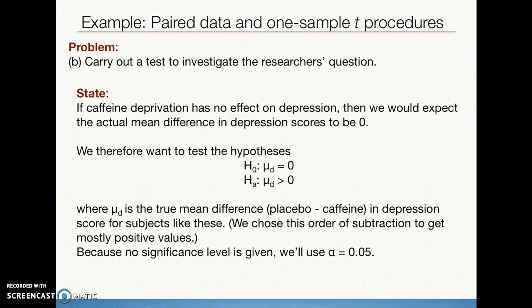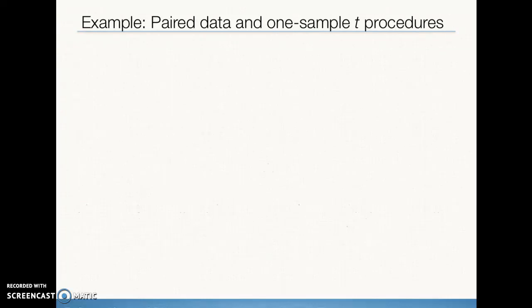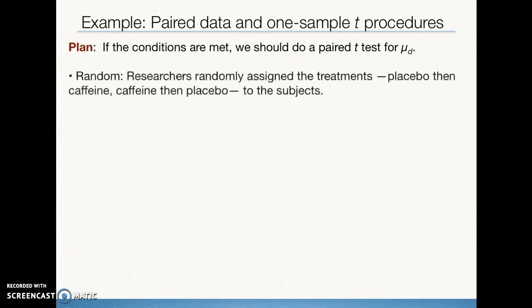No significance level was given to us in the question, so we're going to default to an alpha of 0.05. Next, we need our plan, and this is going to include our checking for conditions. So if conditions for inference are met, we will conduct a paired t-test for difference in population mean.